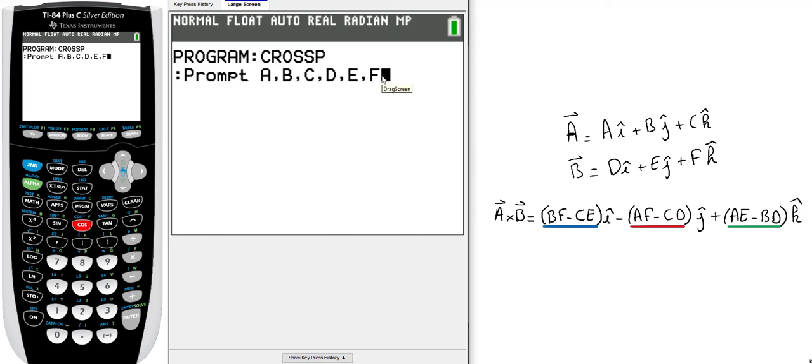Now I need to make the three product combinations. First is b times f minus c times e, and I will store this data in the parameter x. The second one is c times d minus a times f, and I will store this data in y.